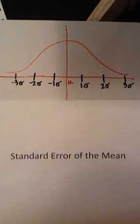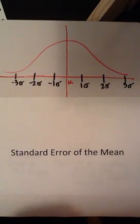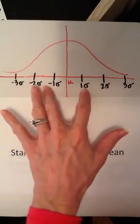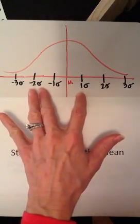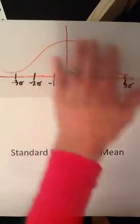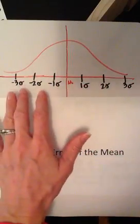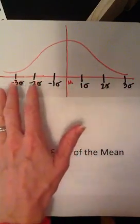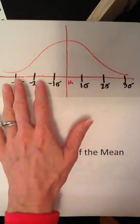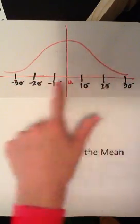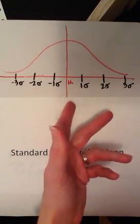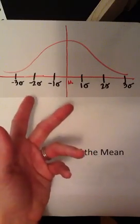If you recall from when we were working with z-scores, z-scores allowed us to take multiple normal distributions that had different scales and standardize their scale so that we could transform a given raw score from one standard normal distribution onto the z-distribution and then compare that to a raw score on a different normal distribution that had a different scale.